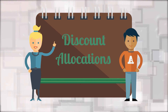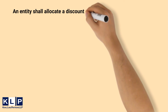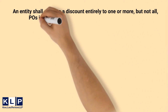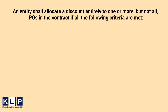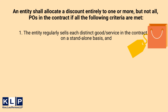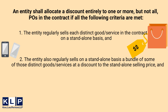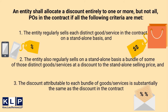Next, we must tackle cases of discount allocations. IFRS 15 states that an entity shall allocate a discount entirely to one or more, but not all, performance obligations in the contract if all of the following criteria are met. Number one, the entity regularly sells each distinct good or service in the contract on a stand-alone basis. Number two, the entity also regularly sells on a stand-alone basis a bundle of some of those distinct goods or services at a discount to the stand-alone selling price. And number three, the discount attributable to each bundle of goods or services is substantially the same as the discount in the contract.